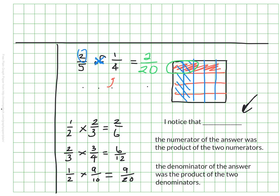I also wrote what I noticed and I noticed that the numerator of the answer was the product of the two numerators. So one times two is two which was the answer's numerator. Two times three is six. One times nine is nine.